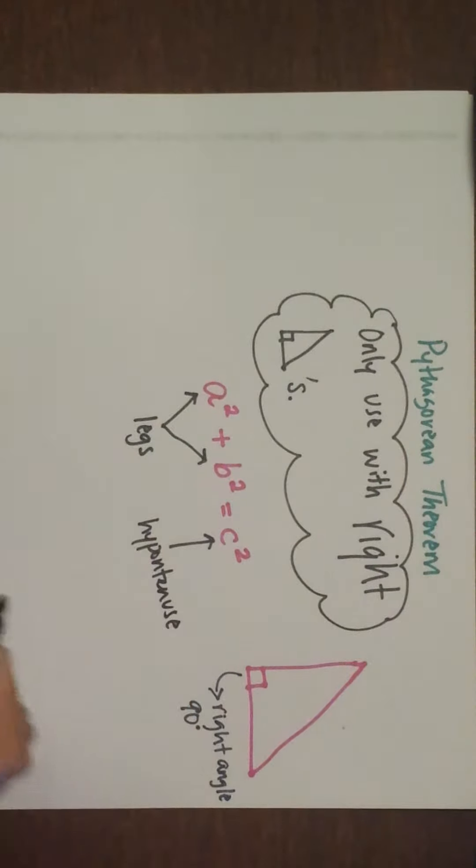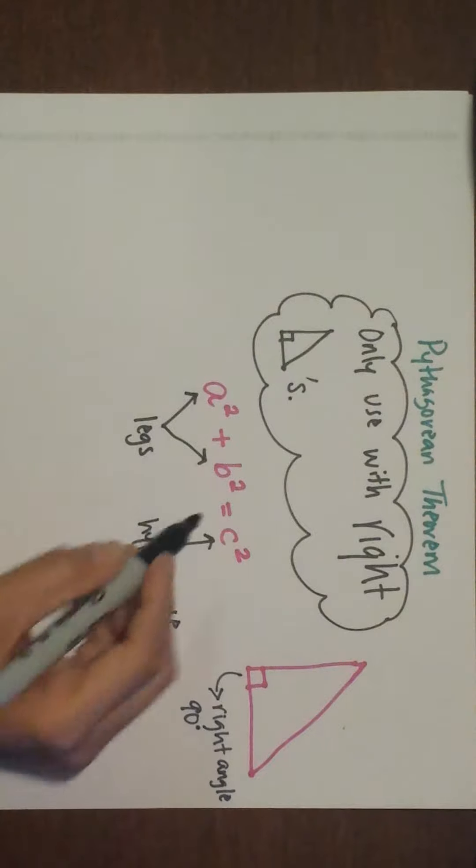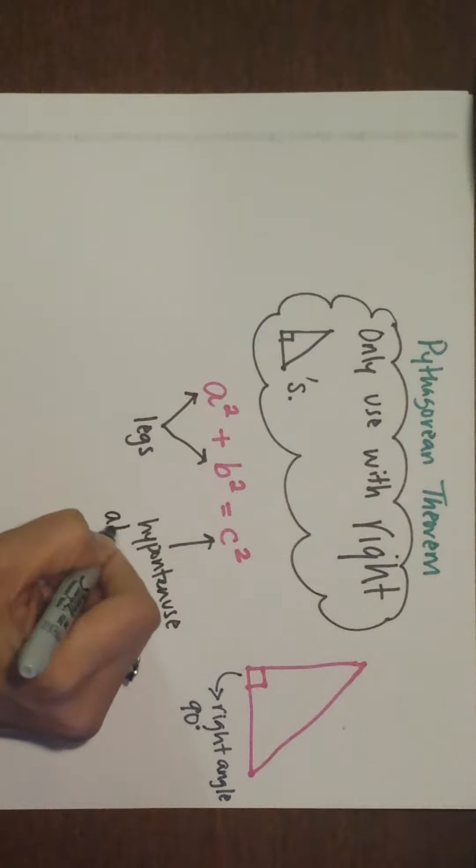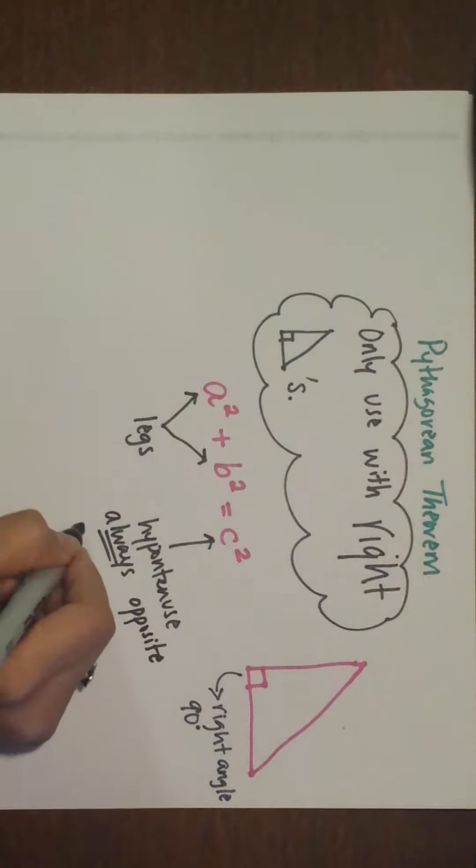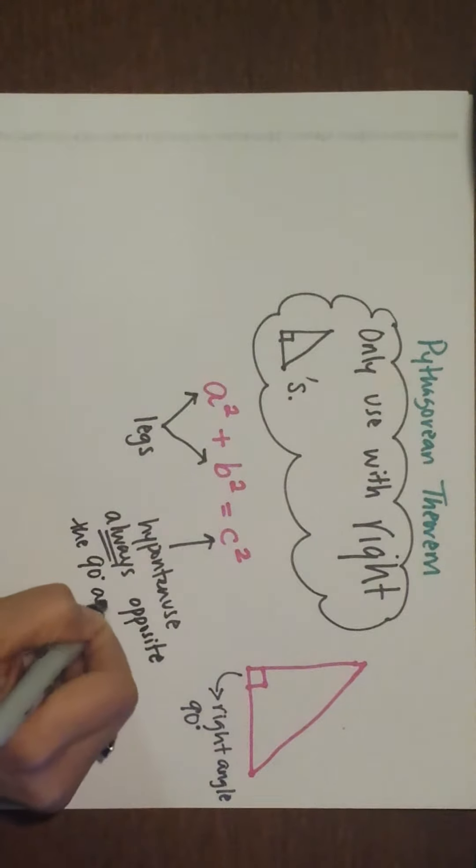The hypotenuse is your longest side, which is always opposite the 90 degree angle.